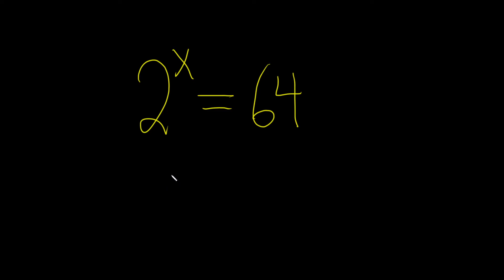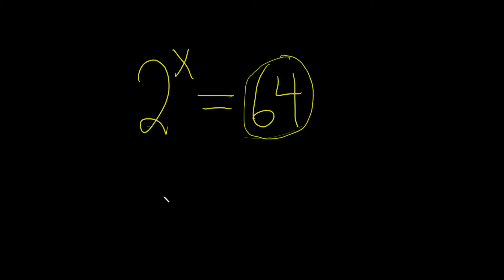In this problem, we have to find the value of x. The goal is to write both sides using the same base. Here the base is 2, so we have to think about how we can write 64. 64 is 2 to what power? Here we have 2 to the x, and 64 is actually 2 to the 6th power.